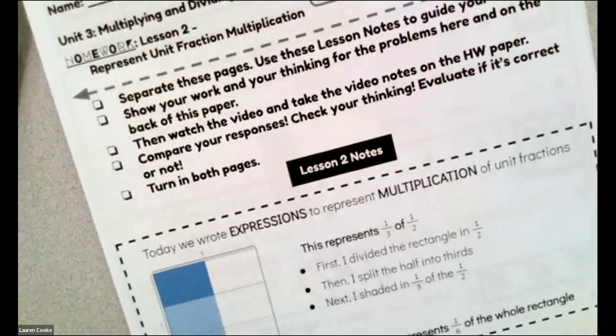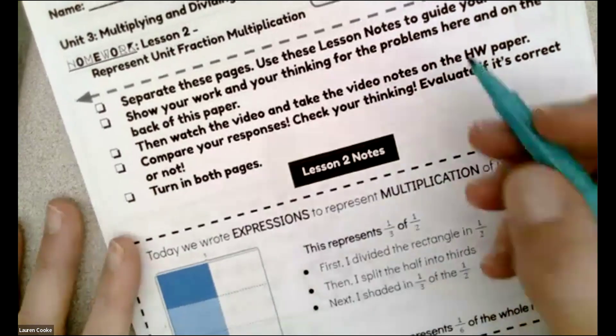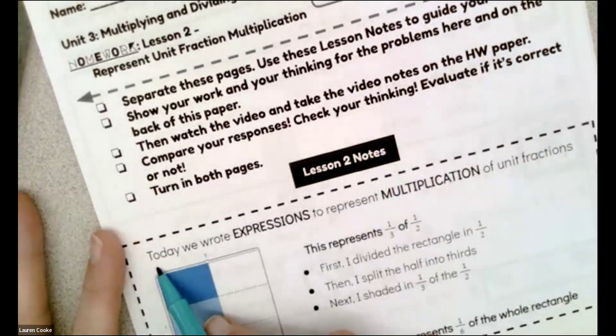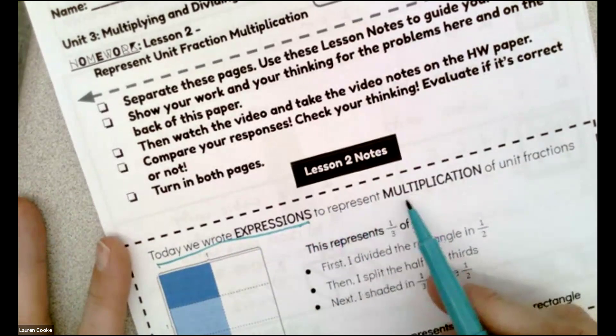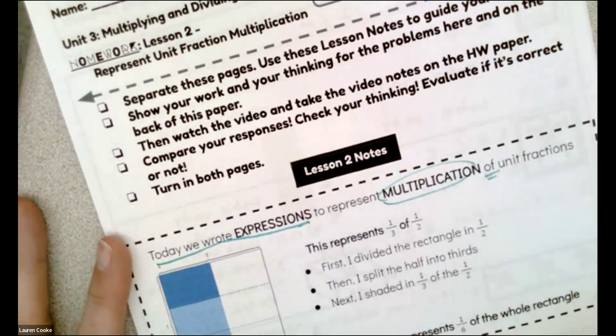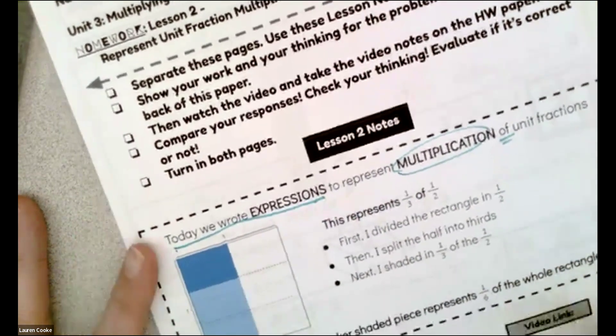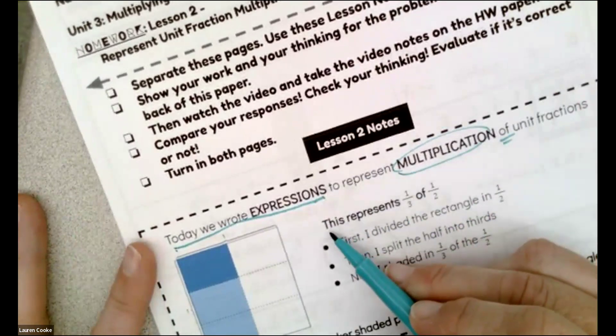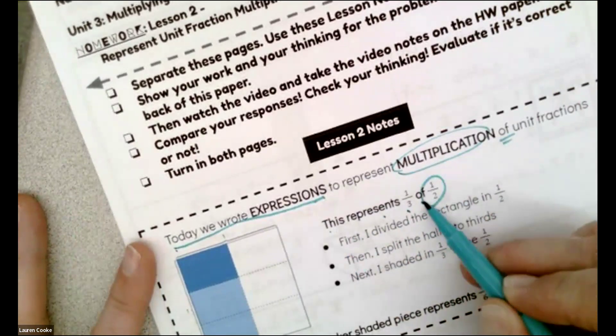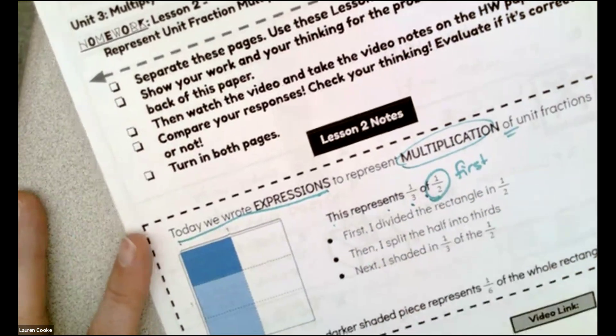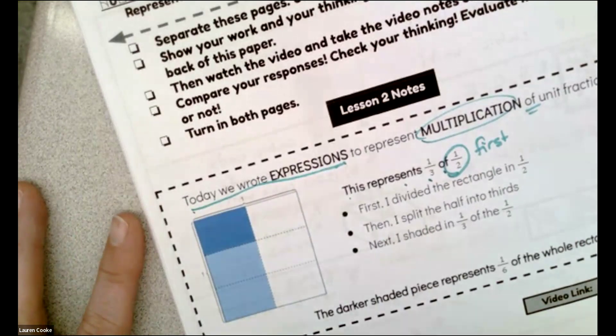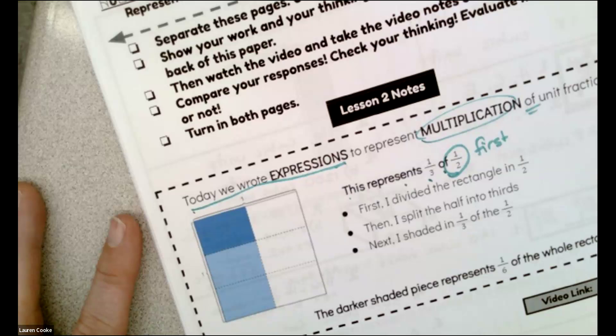All right, let's get started. We have been working on multiplying and dividing fractions, that's Unit 3, and this is Lesson 2. This is what we did on Monday, but today we wrote expressions, multiplication, division, addition, subtraction, no equal sign, to represent multiplication of unit fractions. I want us to really pay attention to the fact that if this is representing one-third of one-half, the one-half is first because it comes after the of.